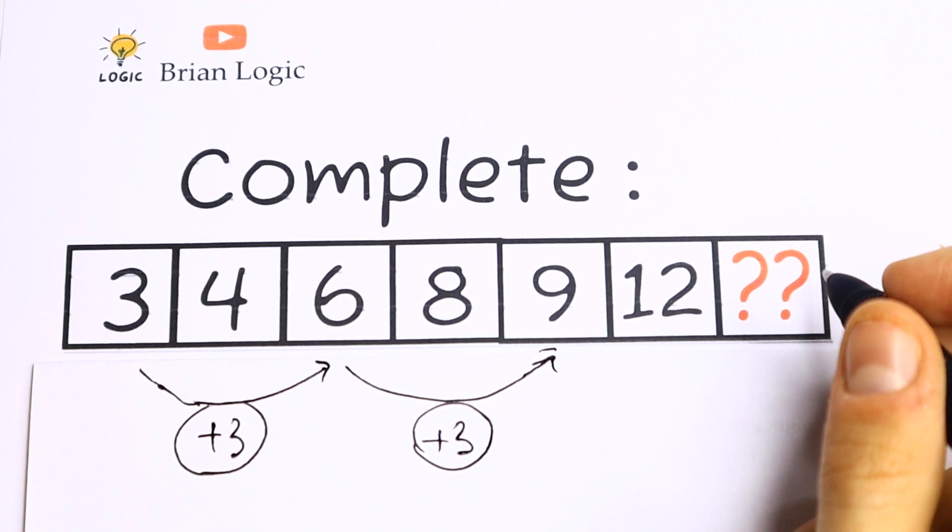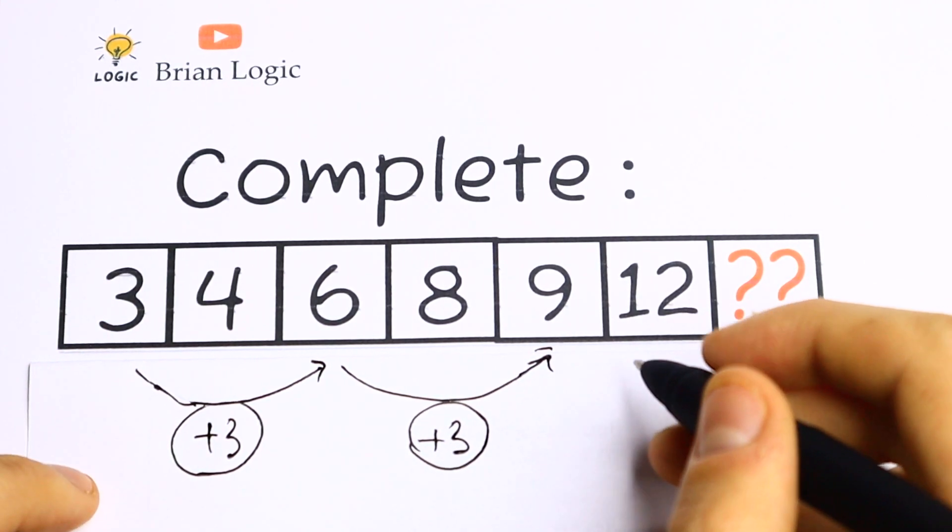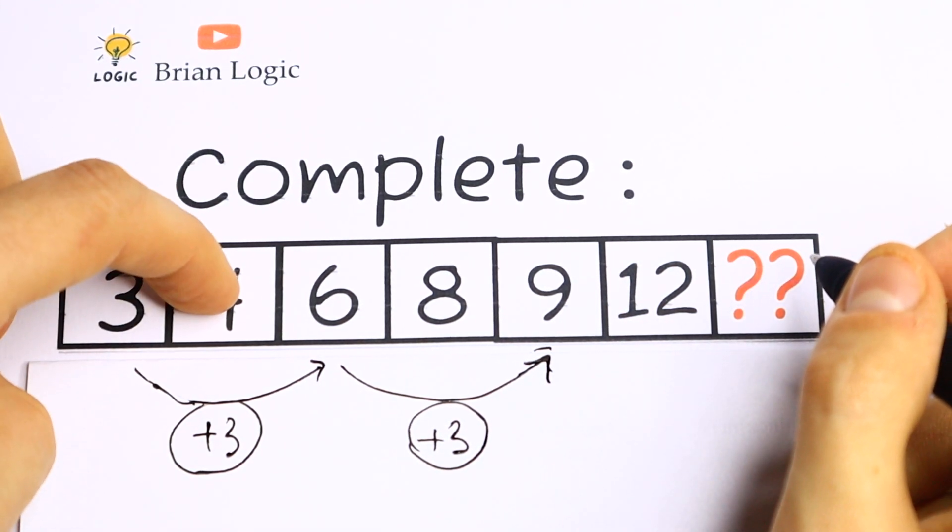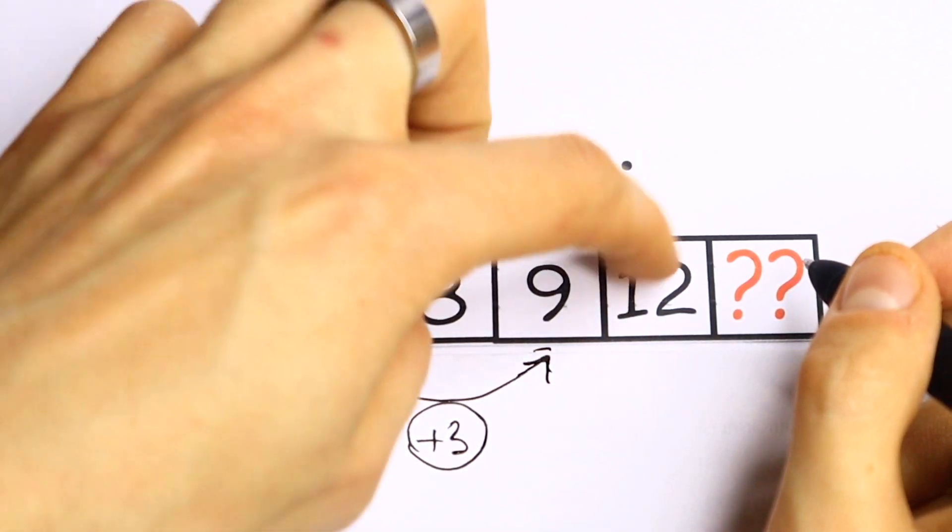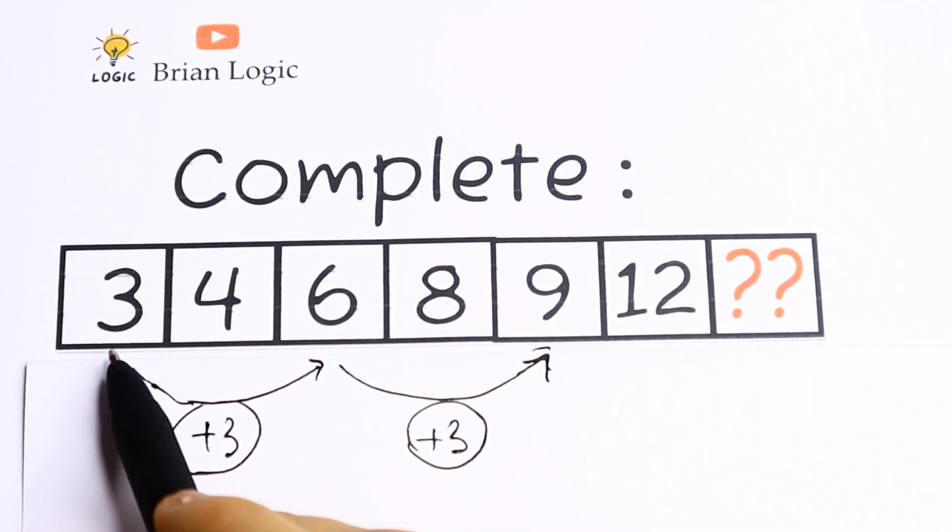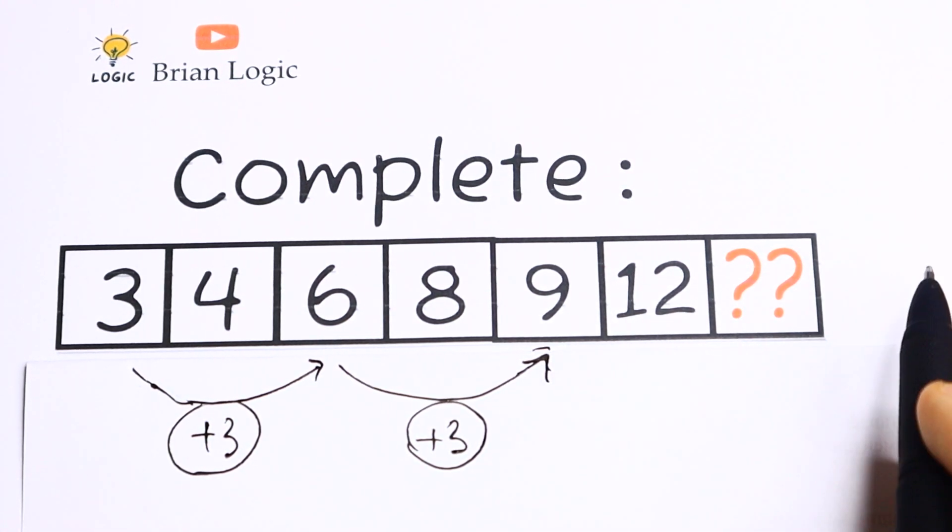But maybe there is another pattern between all of these numbers. And take a look at this number: 4, 8 and 12. So this is the first number, third and fifth. So these are odd positions. We need to add to odd positions 3 to get the next one.